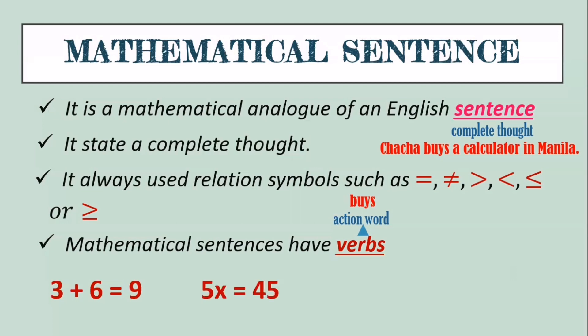More examples of mathematical sentences: 5x equals 45 — the verb is 'equal.' x plus y equals 3. And x minus 7 greater than 2 — those are examples of mathematical sentences. The clue is: if you see a relation symbol — equal, not equal, greater than, less than — that is a mathematical sentence. But if you only see 5x, or x plus y, or x minus 7, or 45 alone, those are expressions.